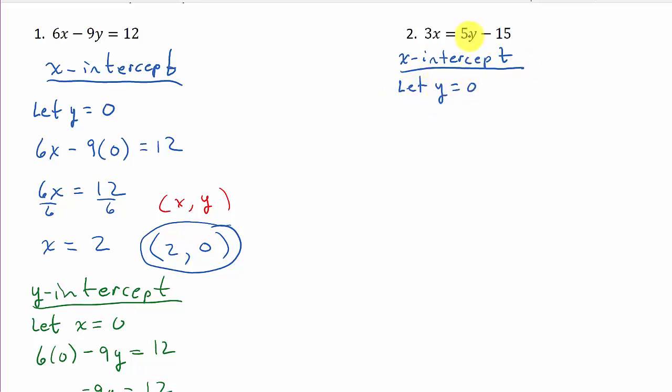So I'm going to plug 0 into here. So that's going to be 3x equals 5 times 0 minus 15. So that's 3x equals, well, this goes to 0. So I get negative 15, divide everything by 3, and that gives me x is negative 5.